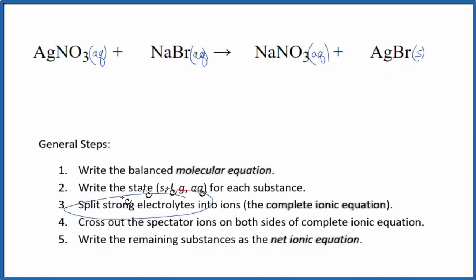Now we can split the strong electrolytes into their ions, and this will give us our complete ionic equation. So silver is always 1+. Good one to remember. The nitrate ion, the whole thing, 1-.